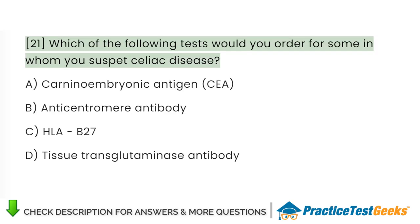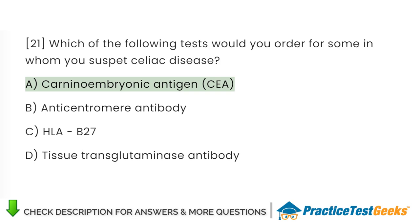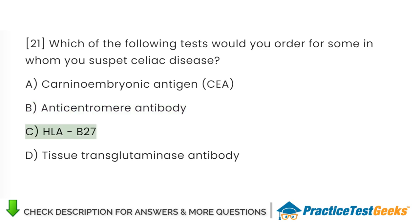Which of the following tests would you order for someone in whom you suspect celiac disease? A. Carcinoembryonic antigen, CEA. B. Anticentromere antibody. C. HLA-B27. D. Tissue transglutaminase antibody.